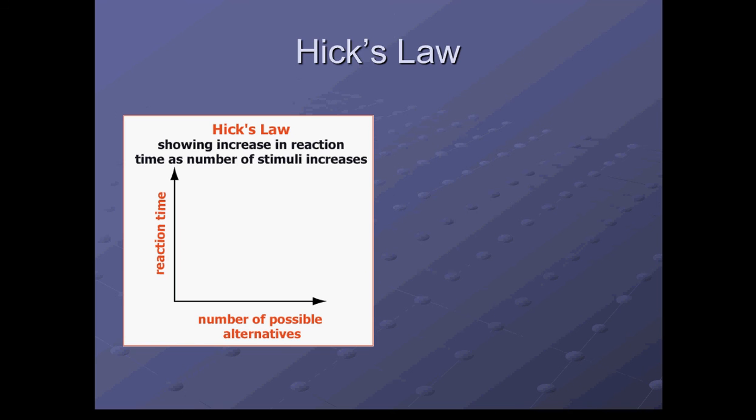So we have the more choices a person has, the more information needs processing. And the longer it takes to process the information, the slower the reaction time. So as you can see, as the number of possible alternatives increase, the reaction time slows down. Eventually it will reach plateau, because once you've got so many possible alternatives, the reaction time can't get significantly slower, which is why you see the drop off towards the end.